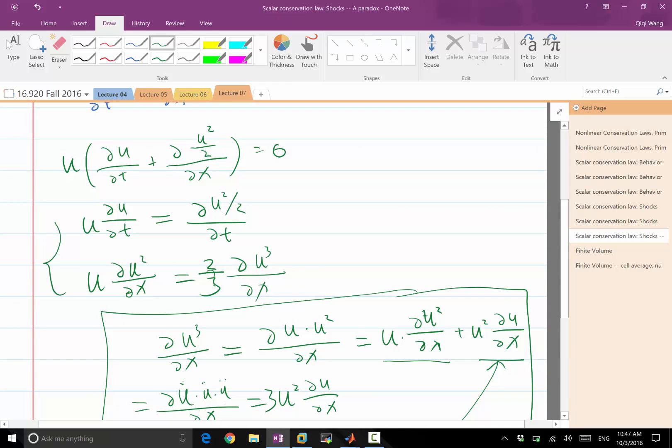With these two substituted into this equation, and we have over two here, this becomes one third when we divide by two. So this equation becomes ∂/∂t of half U² plus ∂/∂x of one third U³ equals zero.